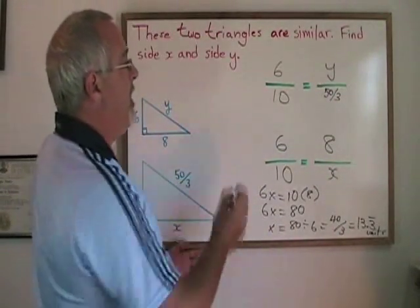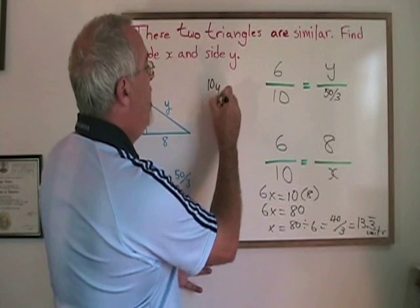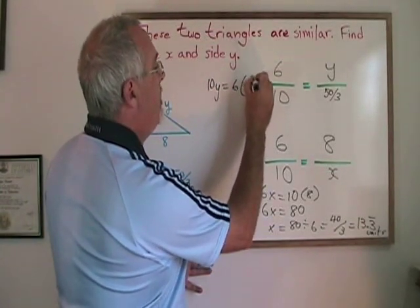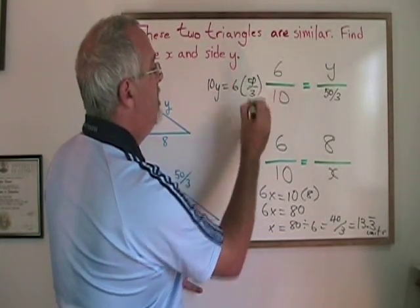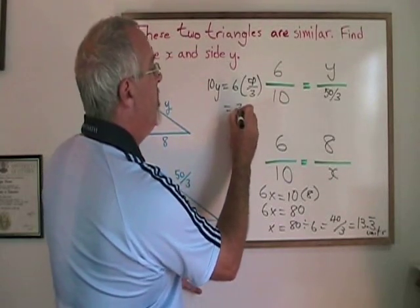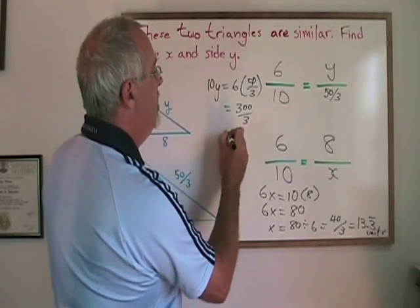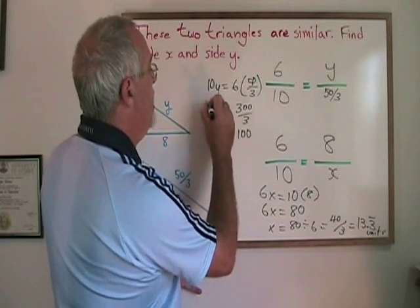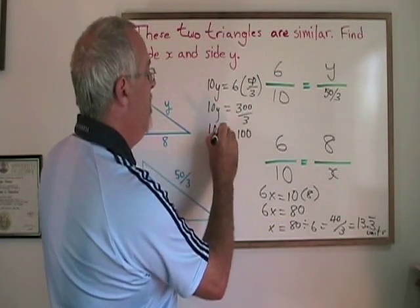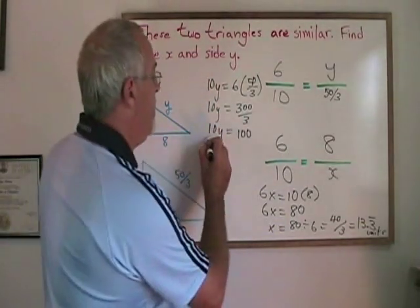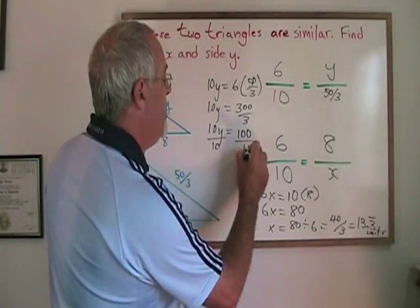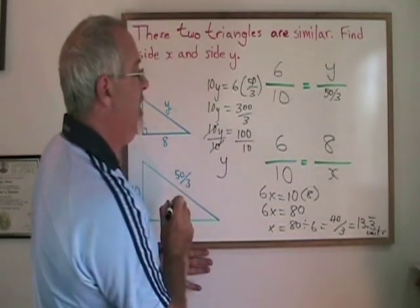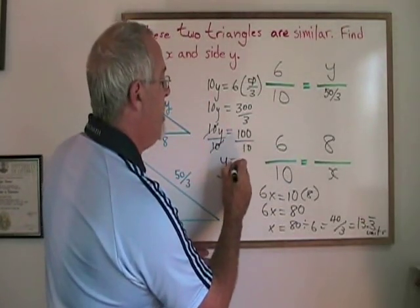Cross multiplying I get 10y is equal to 6 times 50 thirds, which is 300 thirds, which is 100. We have 10y is equal to 100. Dividing both sides by 10, y is isolated and is equal to 100 divided by 10, which is 10.